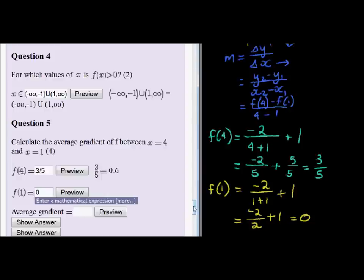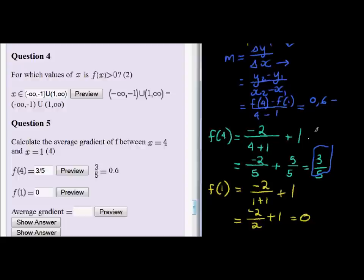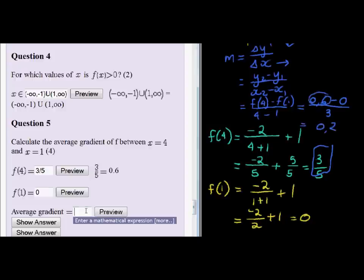So what would the average gradient be? Let's just put these values into our formula here. Our formula being f of 4, or 0.6, or you could have used your fractional answer if you wanted to, minus 0, divided by 4 minus 1 is equal to 3. So in the numerator, we get 0.6 divided by 3 is 0.2. So 0.2 preview, and that is the correct answer.